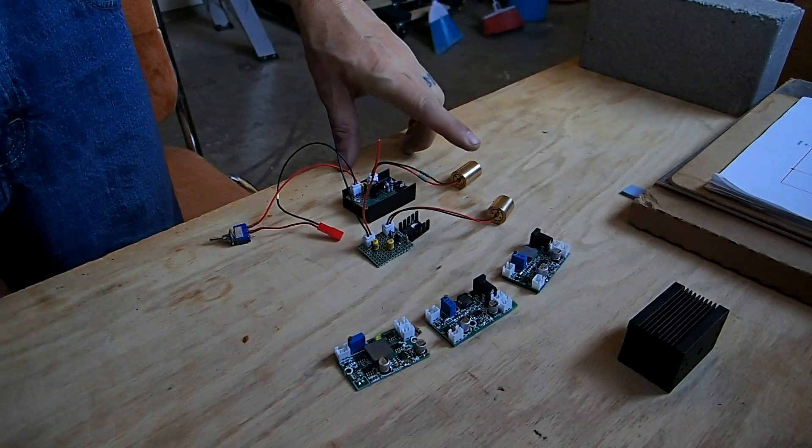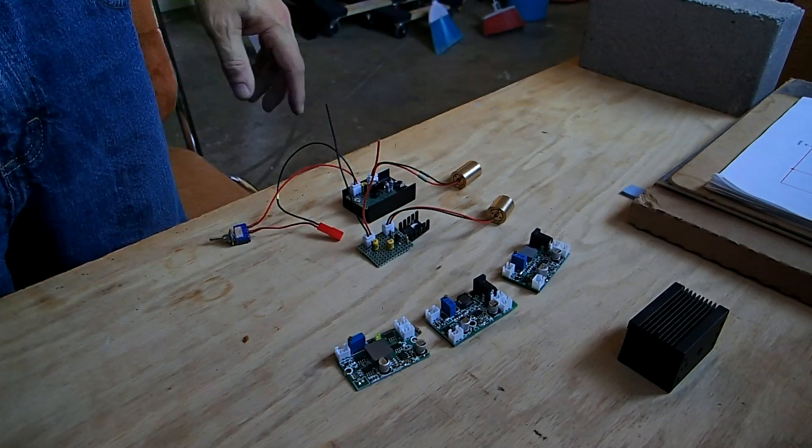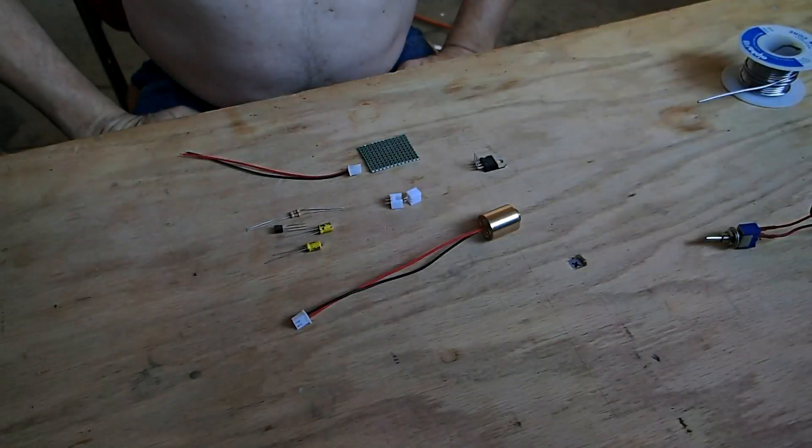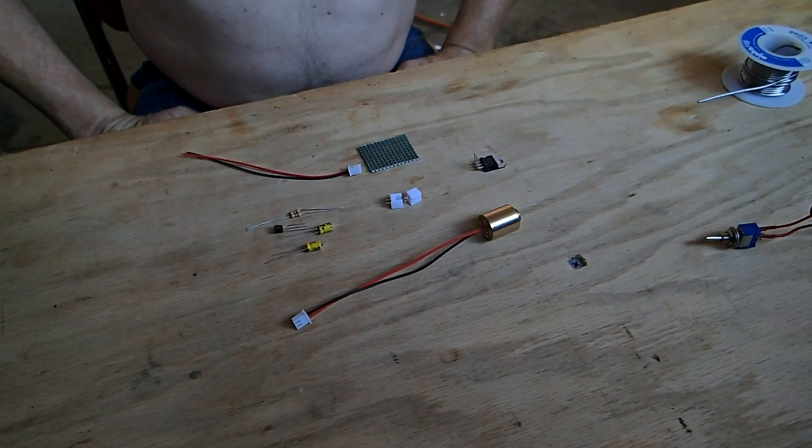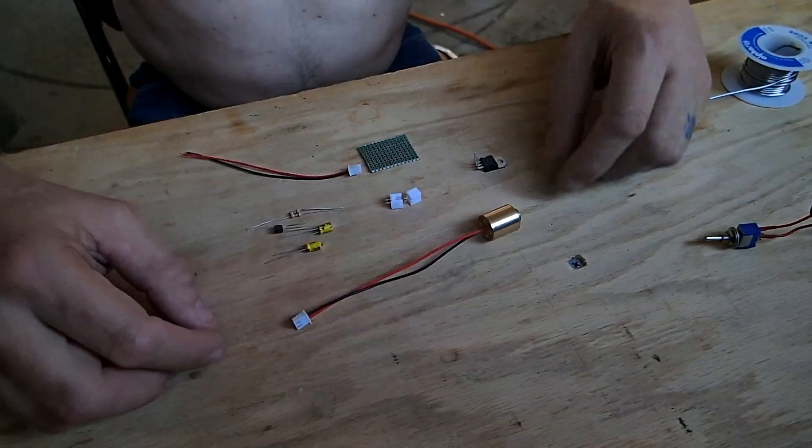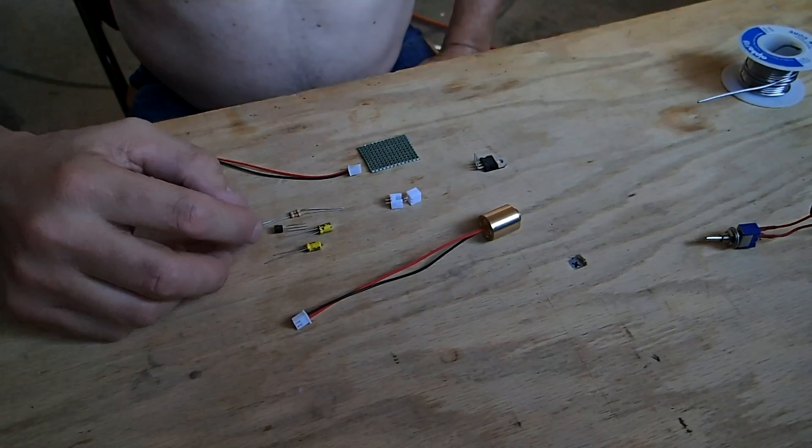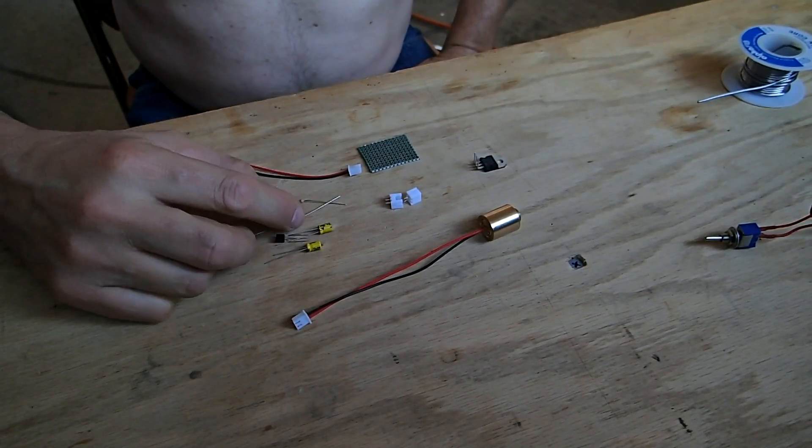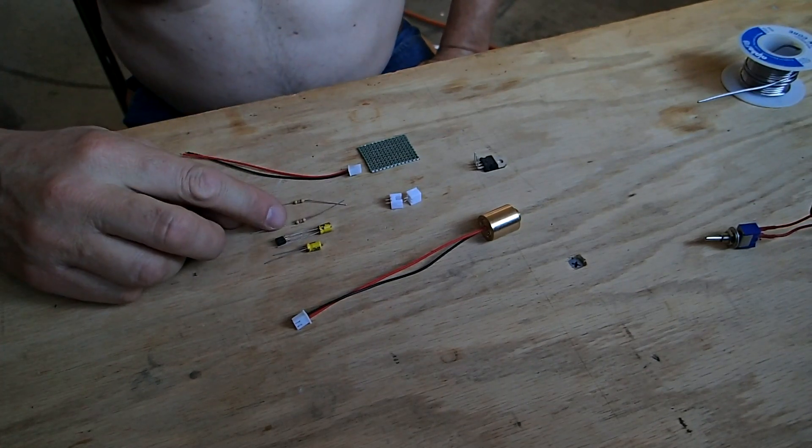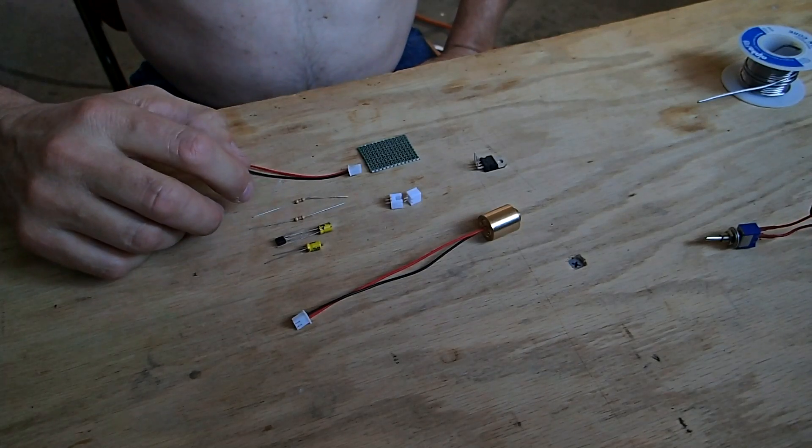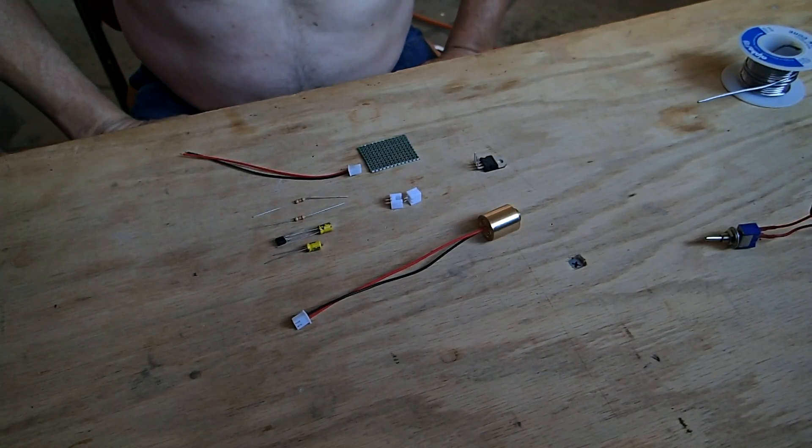I have like a 1.6 watt blue one here. I'm going to show you that one but this is the one we're building the 50 milliwatt green. Today we're going to build a green laser diode driver. These will work for any color. You just got to set it up for the current that you're using. We're using a 50 milliwatt green laser and it runs on a current of about 130 mils. So basically we need to put 4.3 ohm resistor in the circuit.